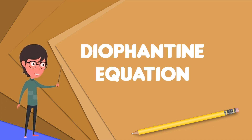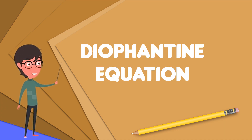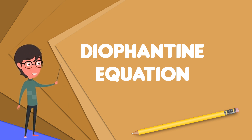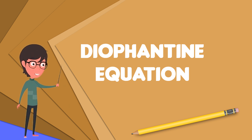In mathematics, a Diophantine equation is a polynomial equation, usually in two or more unknowns, such that only the integer solutions are sought or studied.